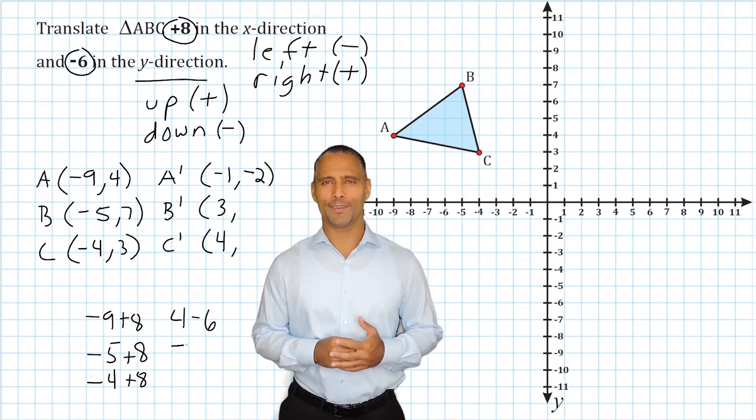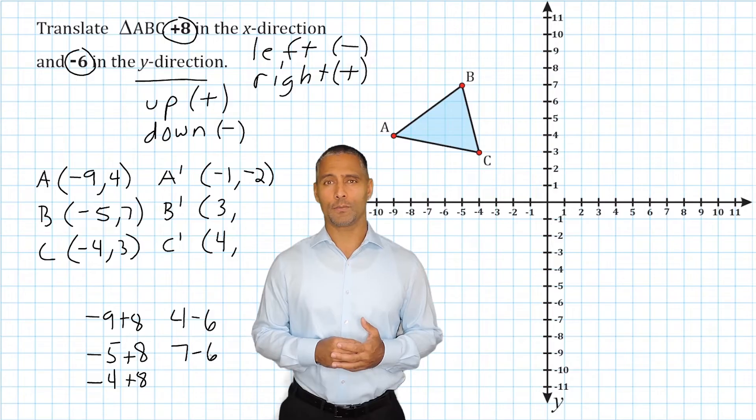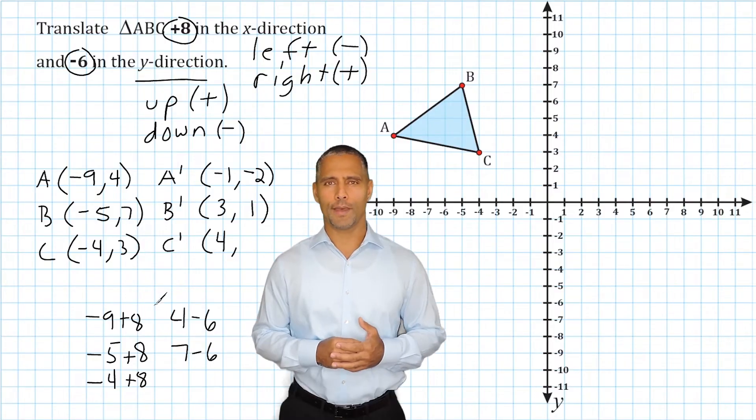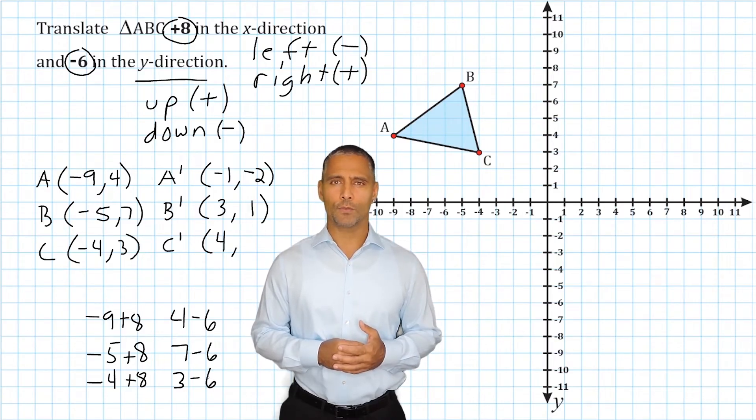Our next y-value is 7. So if we take 7 and subtract 6, that gives us positive 1. Our last y-value is positive 3. If we subtract 6 from that, we are left with negative 3.